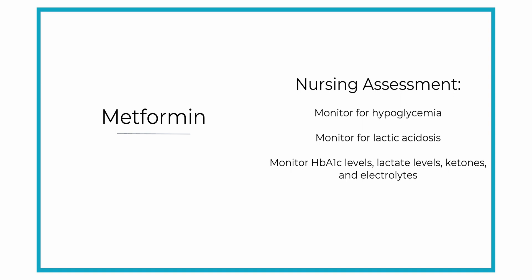Since metformin is supposed to reduce the patient's blood glucose level, we want to make sure it's working effectively. You'll want to check their blood glucose levels periodically and their glycated hemoglobin levels — or hemoglobin A1c — at least every three months to monitor their blood sugars. Lactic acidosis is also a concern, so you'll need to check their lactate levels, ketone levels, blood pH, electrolytes, and glucose levels for lactic acidosis too.